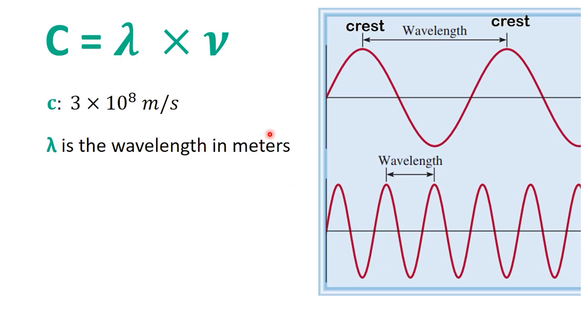Wavelength is measured in meters in the SI system, but in practice, you might see it given in nanometers or micrometers. For calculations, we always convert it to meters.